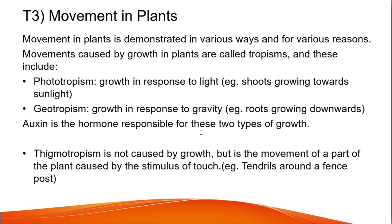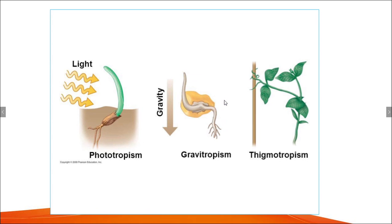Movement in plants is demonstrated in various ways and for various reasons. Movements caused by growth in plants are called tropisms. These include phototropism, which is growth in response to light, and geotropism, which is growth in response to gravity. Thigmotropism is not caused by growth but is the movement of a part of a plant caused by the stimulus of touch. A diagram shows the different tropisms: phototropism, gravitropism, and thigmotropism.